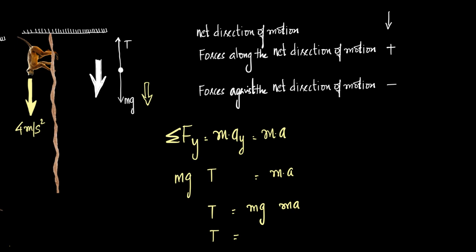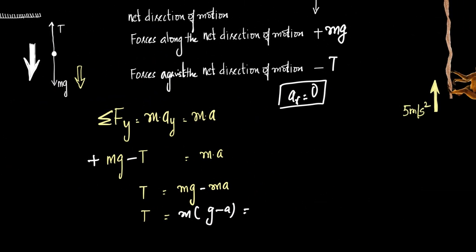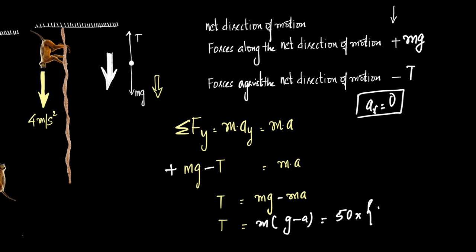By Newton's second law, sigma F_y = m·a_y. Since the monkey only moves in the y direction, a_x = 0 and the only acceleration is a_y, replaced by a. So mg is positive and tension is negative: mg − T = ma, therefore T = mg − ma = m(g − a). The mass is 50 kg, g is 10, and a is 4, giving T1 = 50 × 6 = 300 Newtons.